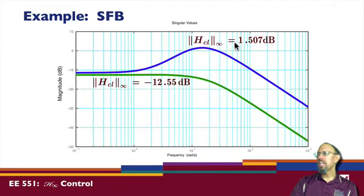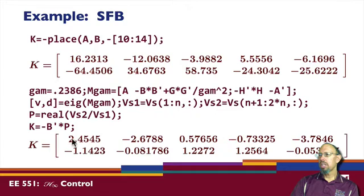So remember, when we place these eigenvalues, we chose eigenvalue places that seemed reasonable. That is, putting them all on the negative real axis. And yet, that wasn't enough to guarantee a low H infinity norm when we actually closed the loop. So the gain that we chose, this gain, actually gave us a lower H infinity norm.